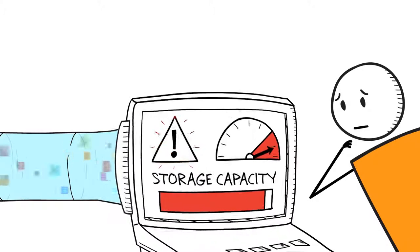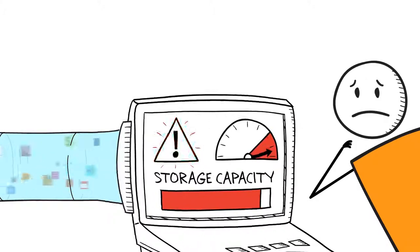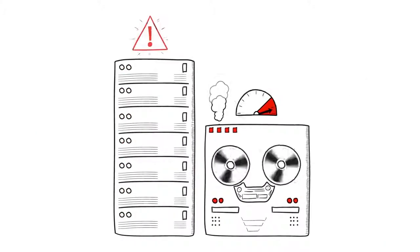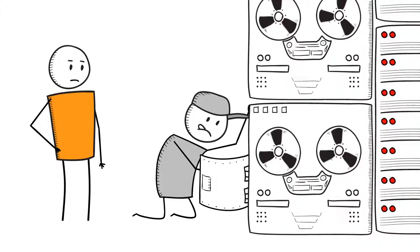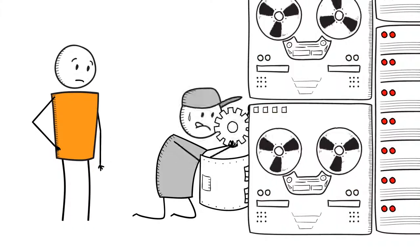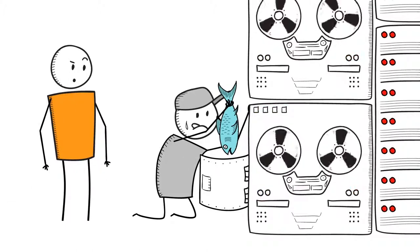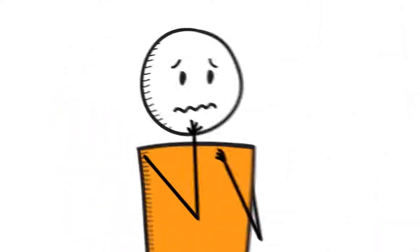Next, you have to guess how much capacity you need in the future. Getting this wrong means either not having the storage you need, or you overspend and end up with excess capacity that sits idle. And then you have to continually make sure your data stays healthy through laborious data verification and manual repairs.